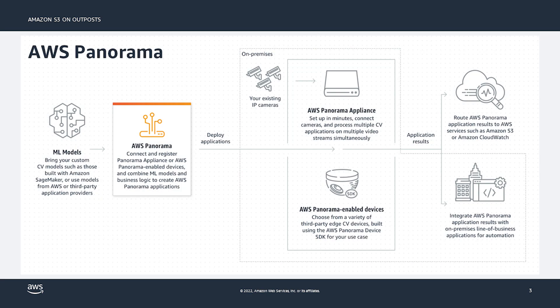AWS Panorama is a service that brings computer vision to your on-premise camera network. You install the Panorama appliance or compatible device in your data center, register it, and you can deploy your computer vision applications from the cloud, or in today's session, we'll show how to deploy locally right on your AWS Outpost.